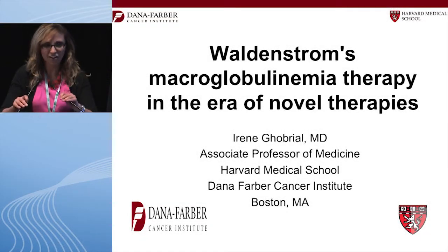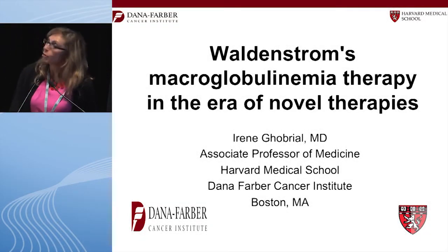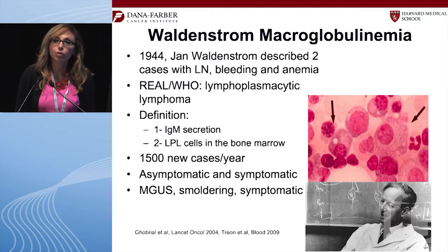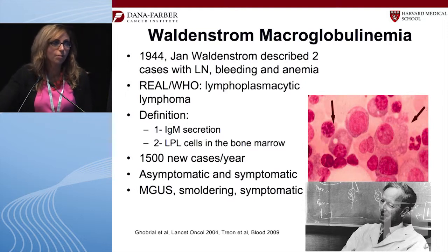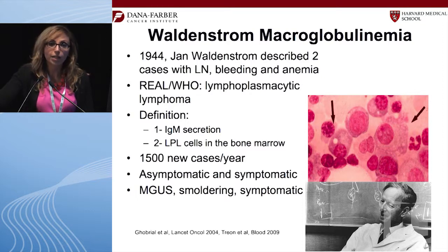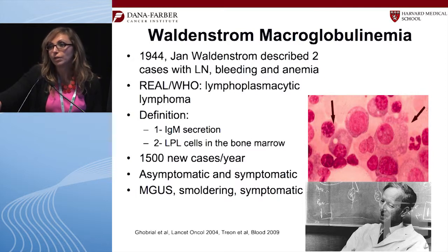Thank you, it's really an honor and a pleasure to be here today to present some of the new data that we have on Waldenström macroglobulinemia. Many of you already know Waldenström is a disease described back in 1944 by Jan Waldenström, when he described two cases of patients who had lymphadenopathy, splenomegaly, hyperviscosity, and an IgM protein in the peripheral blood.